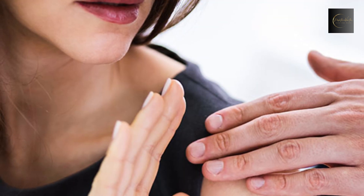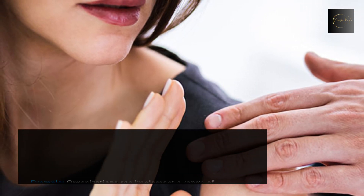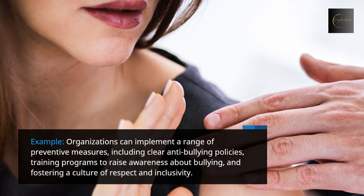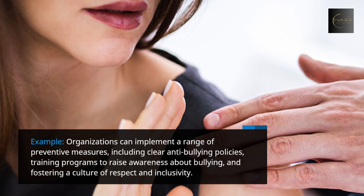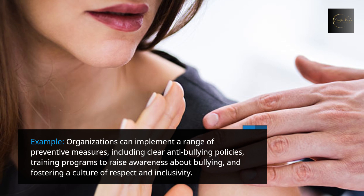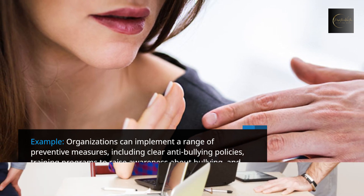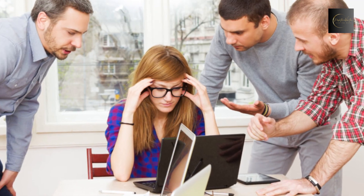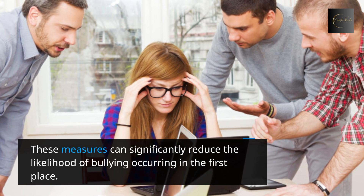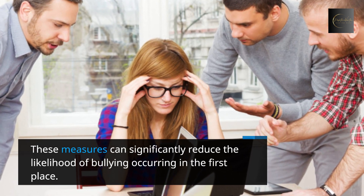Organizations can implement a range of preventive measures, including clear anti-bullying policies, training programs to raise awareness about bullying, and fostering a culture of respect and inclusivity. These measures can significantly reduce the likelihood of bullying occurring in the first place.